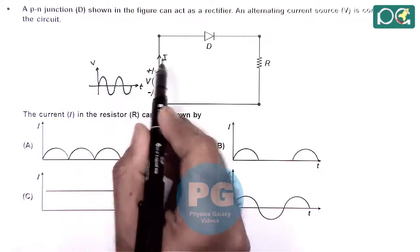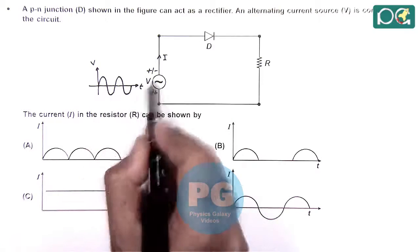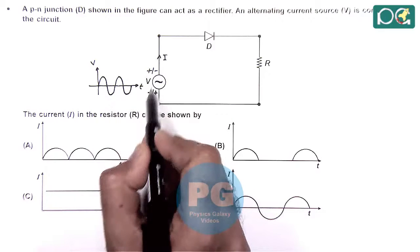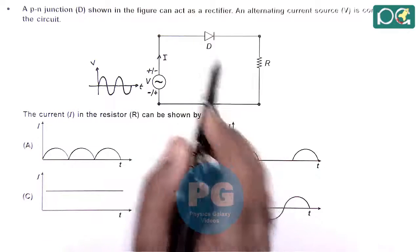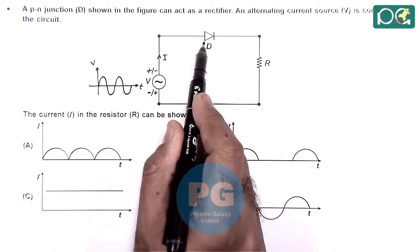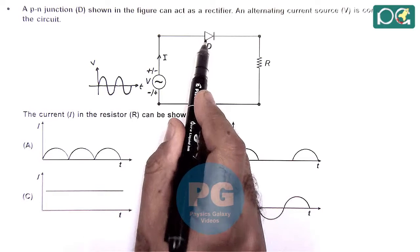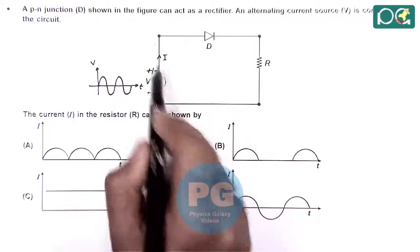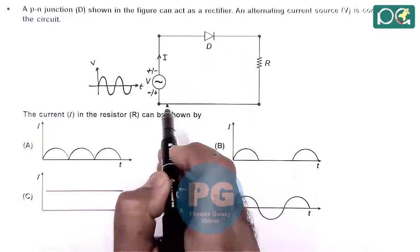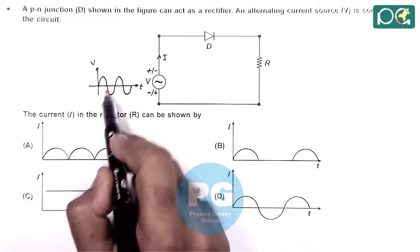And if we just check with the current I we can see in the first half cycle when this terminal is positive and this is negative. So the diode D will be forward biased and if it is forward biased here we can say current will be passed through it. It will allow current to pass and through resistance the current will pass in the same sinusoidal manner.